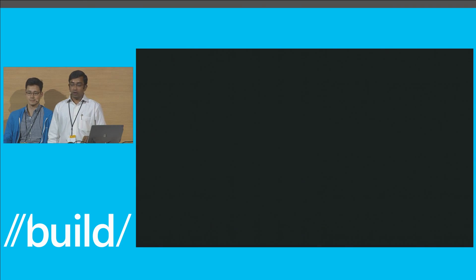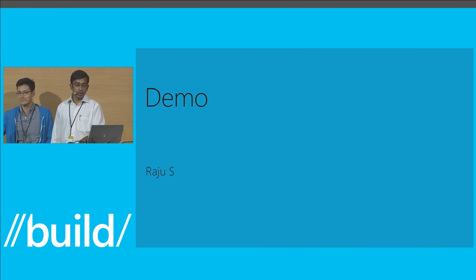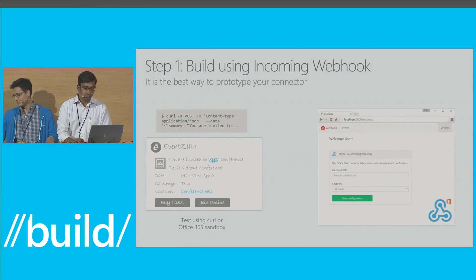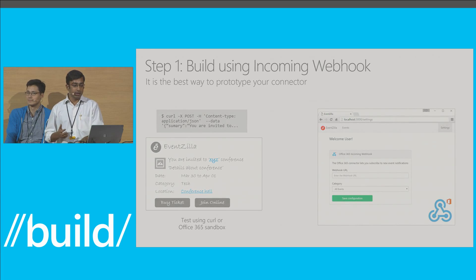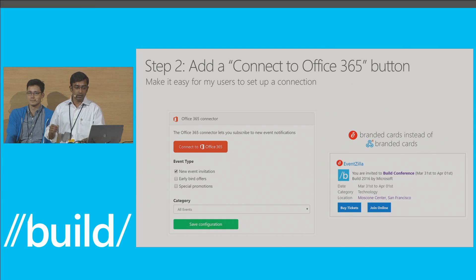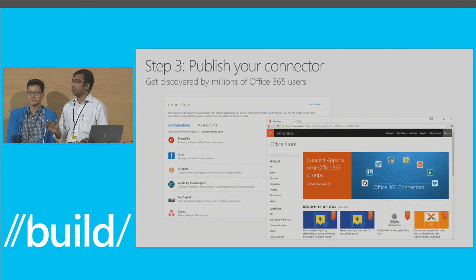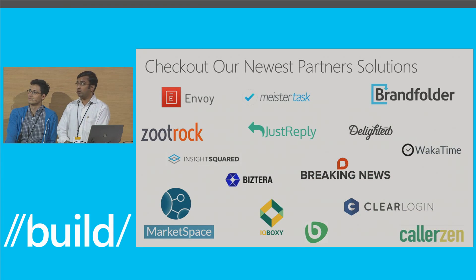To quickly recap: I showed you how to prototype a connector using incoming webhooks — the easiest way to prototype. Once prototyped and you've gotten feedback and iterated, you add a connect button which makes it extremely easy for users to configure your connector. Once completely built, you publish it to the connector catalog and store using the publish to store option, to get discovered by millions of Office 365 users.